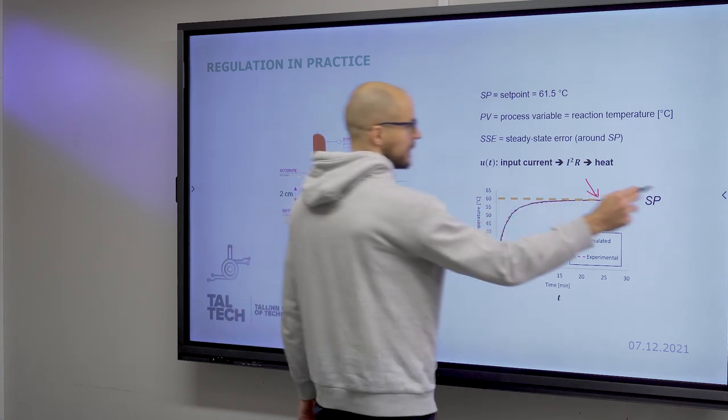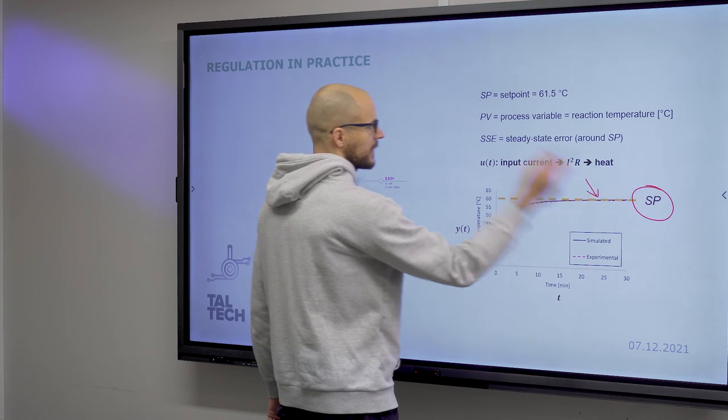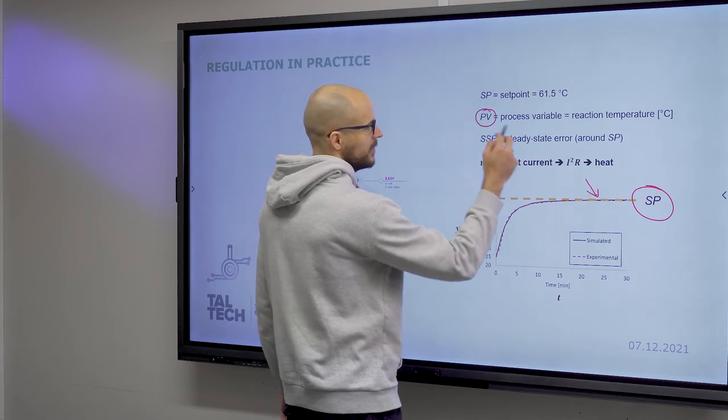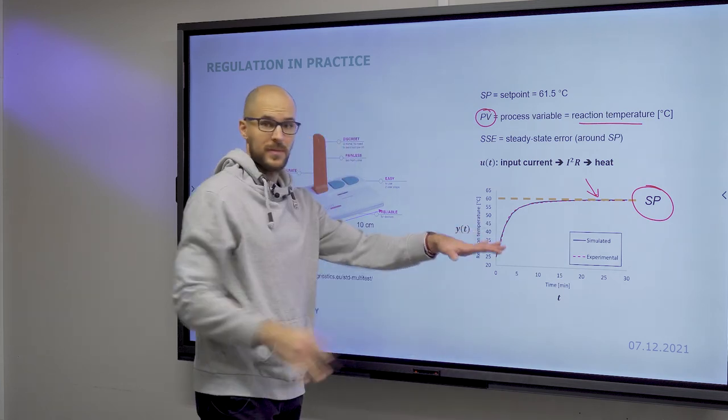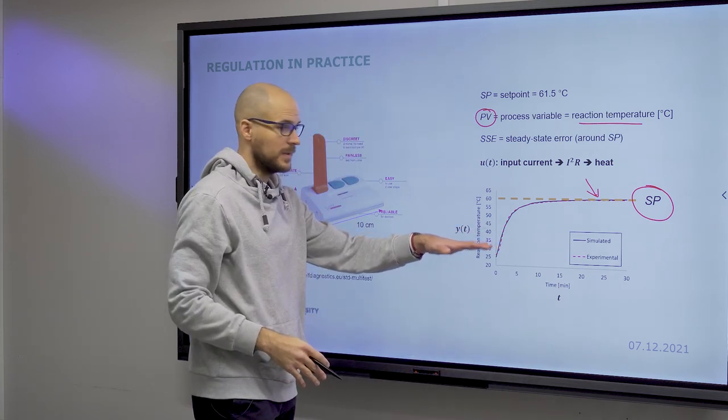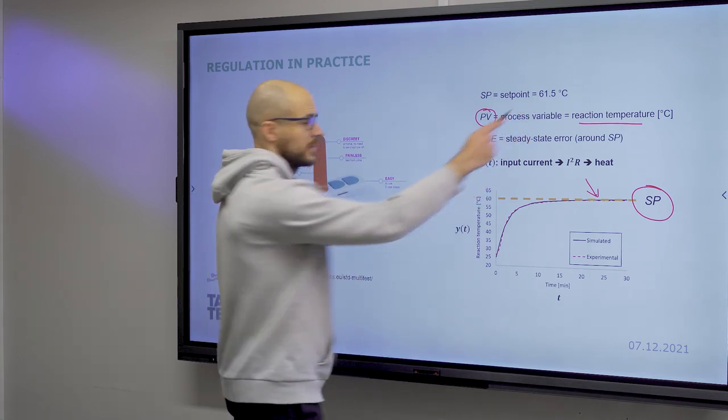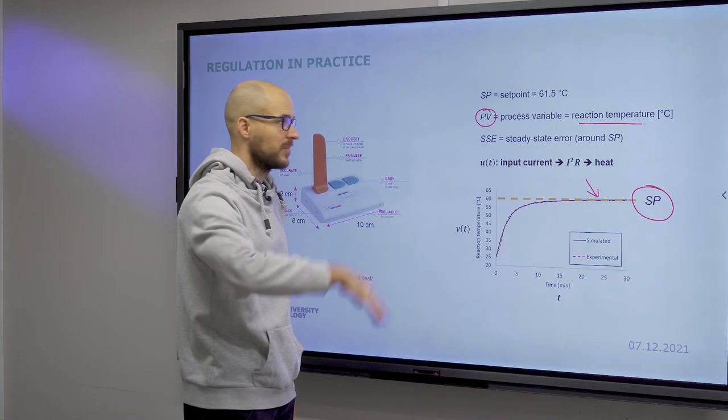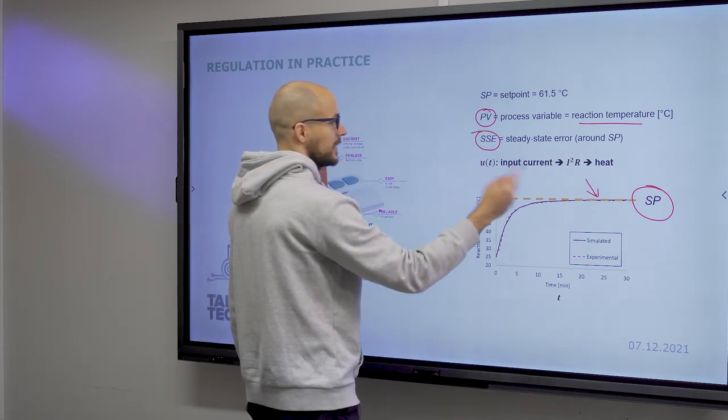So to clarify, the terminology: setpoint is your target. In this case, 61.5 degrees Celsius. Process variable being the reaction temperature. In this case, this is a microreactor, which is being heated for nucleic acid amplification. And you need to reach this target temperature for the reaction to happen at an optimal rate.